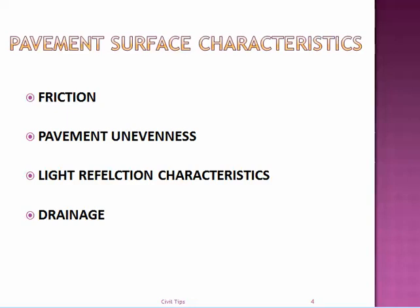The first one is pavement surface characteristics — about friction. During rainy season we hear a lot of stories about the skidding of a vehicle on the road, and this is due to insufficient frictional resistance. The friction between the carriageway and the tire of the vehicle is very important for smooth running, avoiding slip and skid.